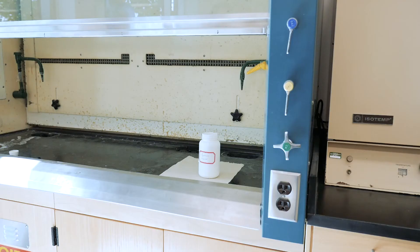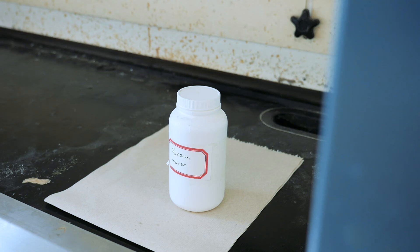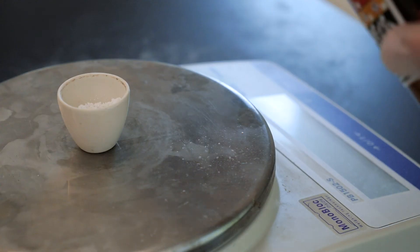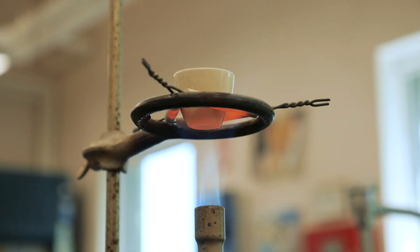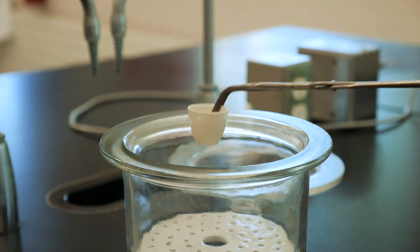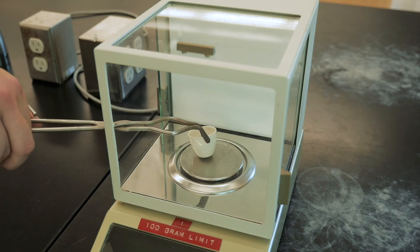Be sure to dispose of your sample in the waste container located in the fume hood, and then repeat the whole procedure, except for drying the crucible, with a second sample of gypsum. Any good experimentalist repeats their measurements to ensure that they are reproducible.